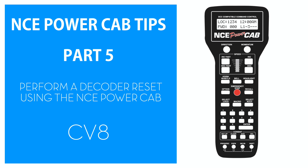A couple of things you need to note before we get started. If you have a programming track, make sure the loco containing the decoder you wish to reset is placed on it. If you don't have a programming track, you can use your layout — just make sure that only the loco containing the decoder you wish to reset is on it. Any other locos on the layout would be reset as well, so just make sure it is the decoder in question.